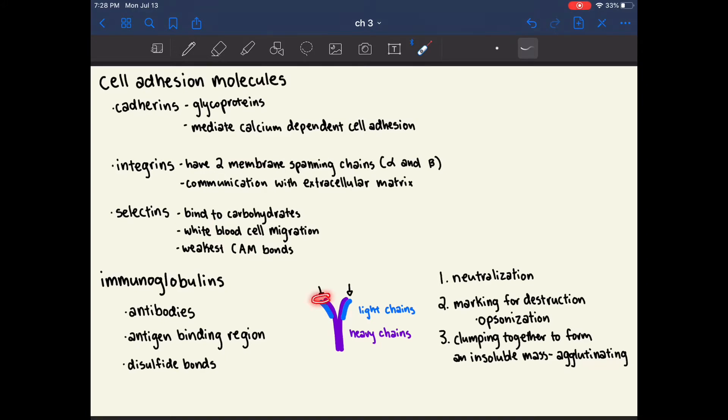Immunoglobulins have at the tips of their Y shape this region called an antigen binding region, and this is the region that senses the antigen or the foreign invader.